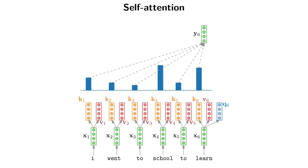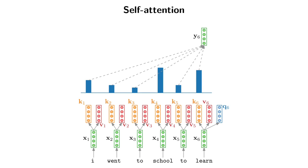Let's look in detail at how self-attention actually works. I'm going to use an NLP example — a natural language processing example — but you can do the same thing with speech or even computer vision. Let's say we've got this input sentence: 'I went to school to learn,' and we get a word embedding for each of the words in that sentence. The self-attention layer takes a sequence of vectors as input and produces another sequence of vectors as output. The notation I will use is: we've got a sequence of input vectors x, and then we've got an output sequence y. That's one self-attention layer.